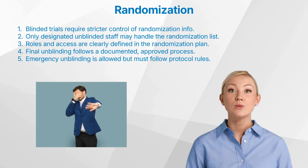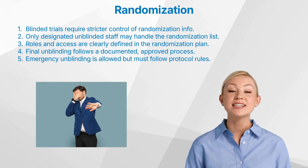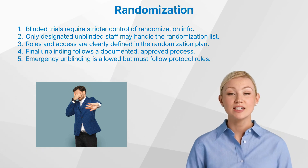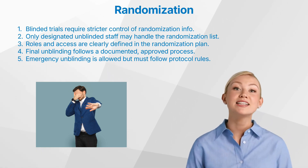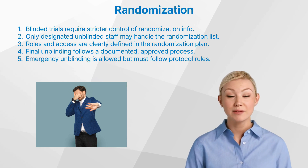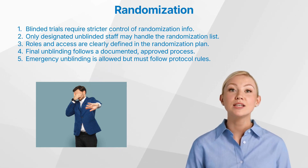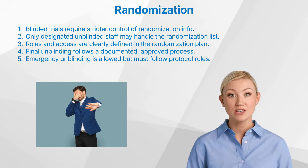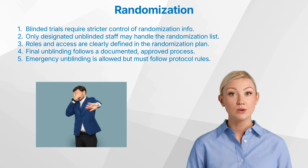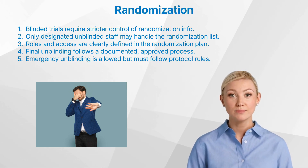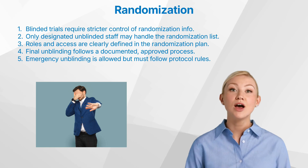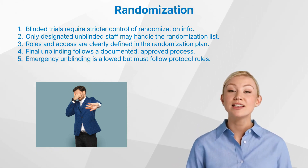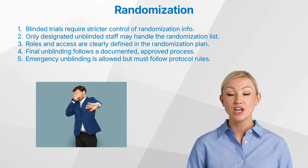Let us now talk about what's different in blinded trials. Blinded studies require even more care. In a double-blind trial, for example, neither the patient nor the investigator should know which treatment is being given. That means even more effort to restrict who has access to the randomization list, and unblinded personnel must be assigned. Only unblinded personnel, like a specific statistician or data manager, can handle the list, and their identities and roles must be clearly defined in the randomization plan. At the end of the study, the data needs to be unblinded for final analysis, following a predefined procedure requiring sponsor approval and documented confirmation.